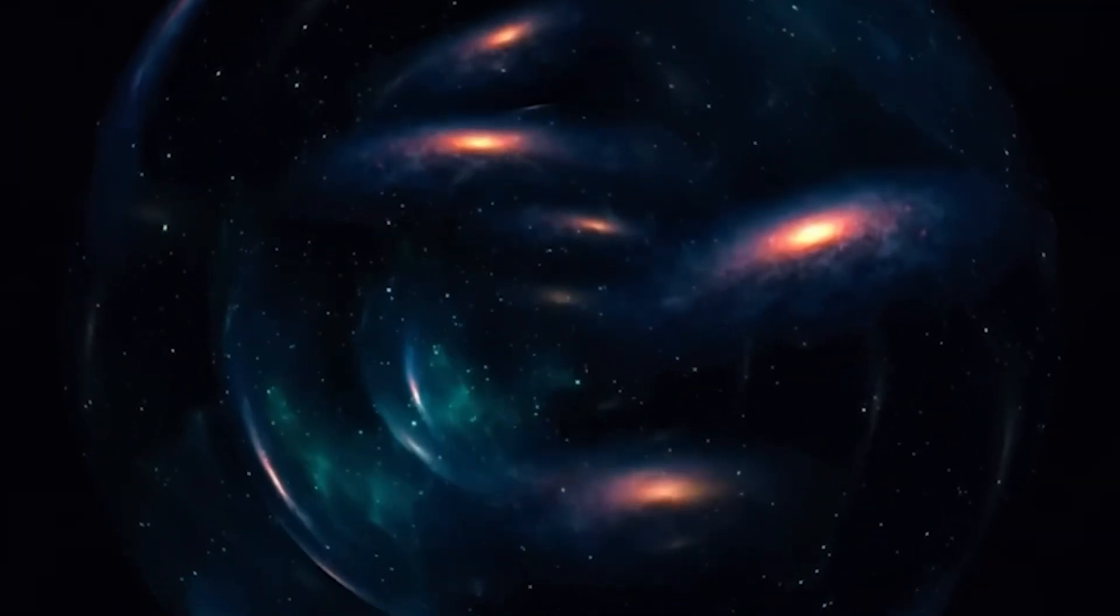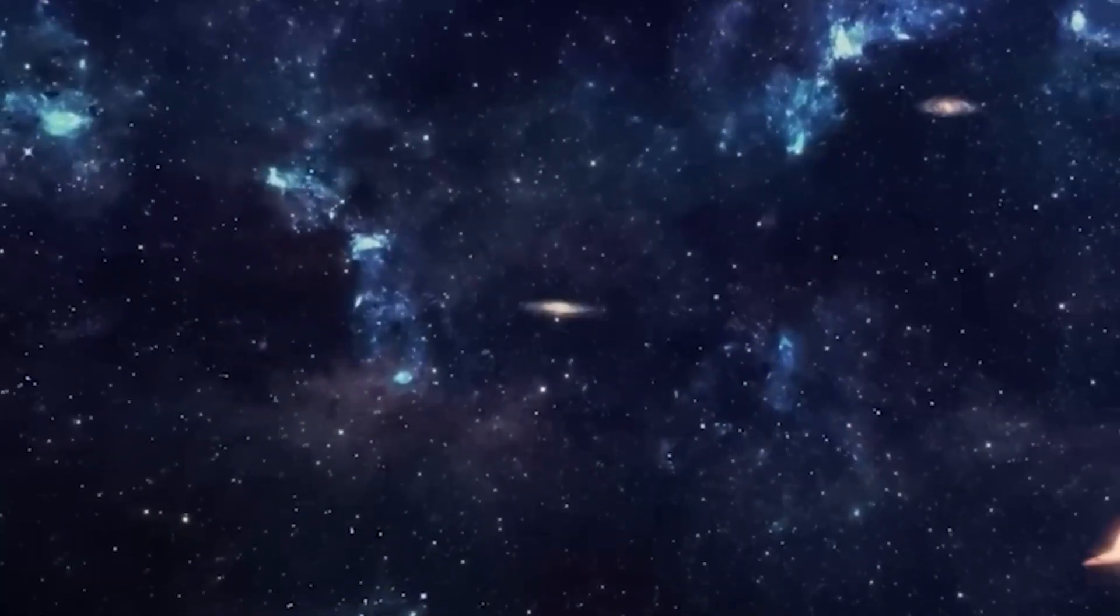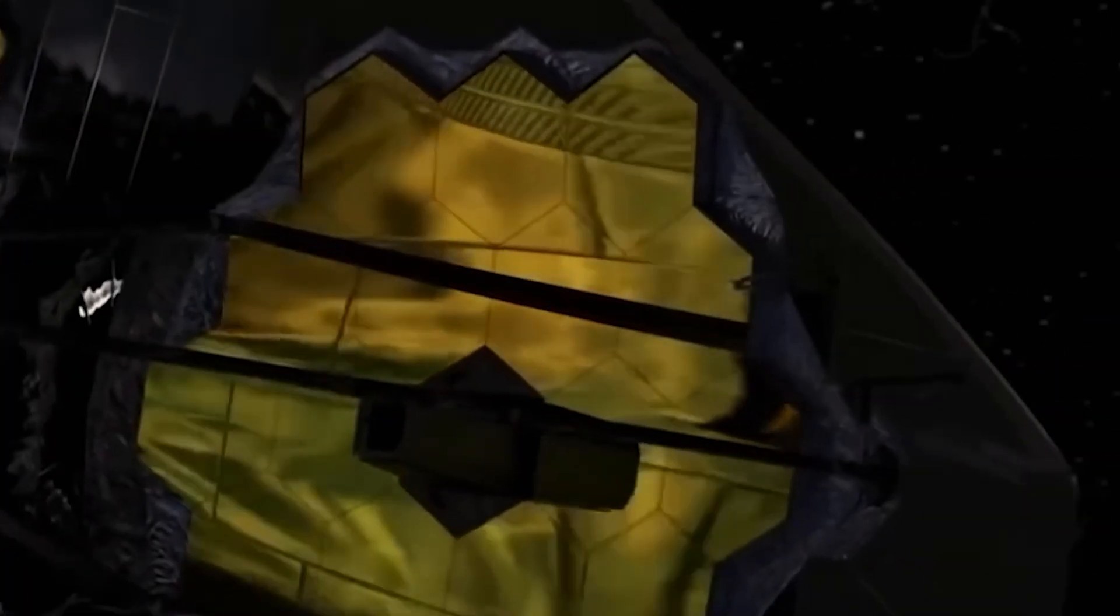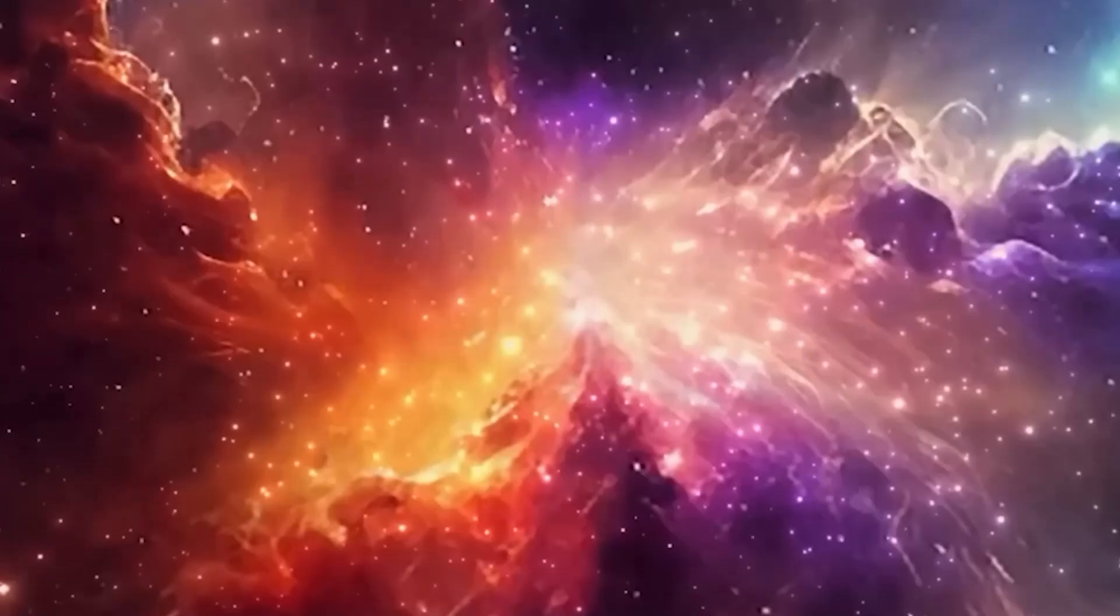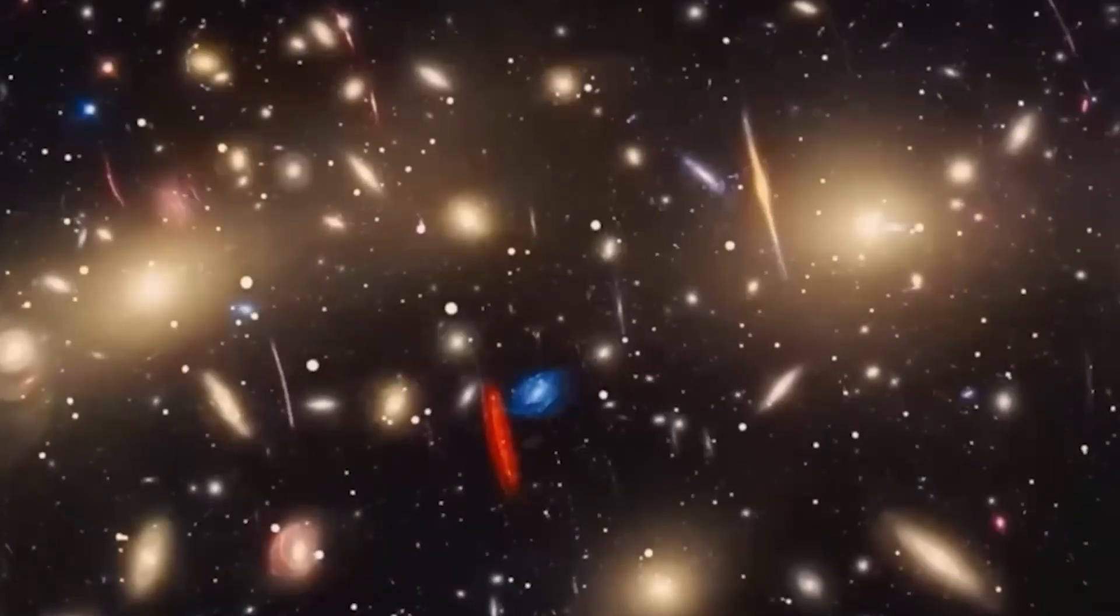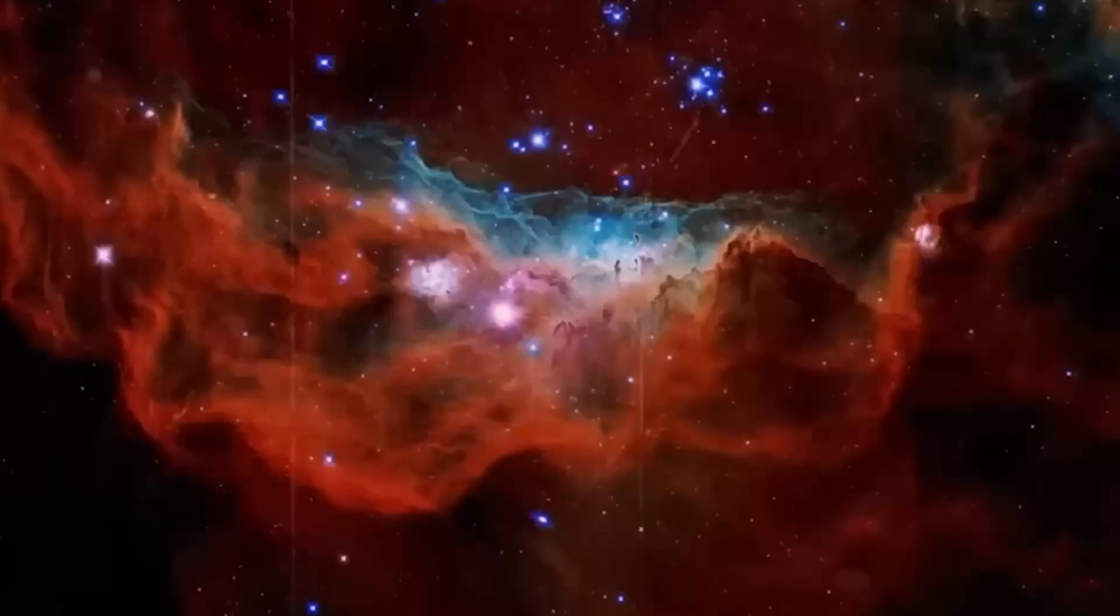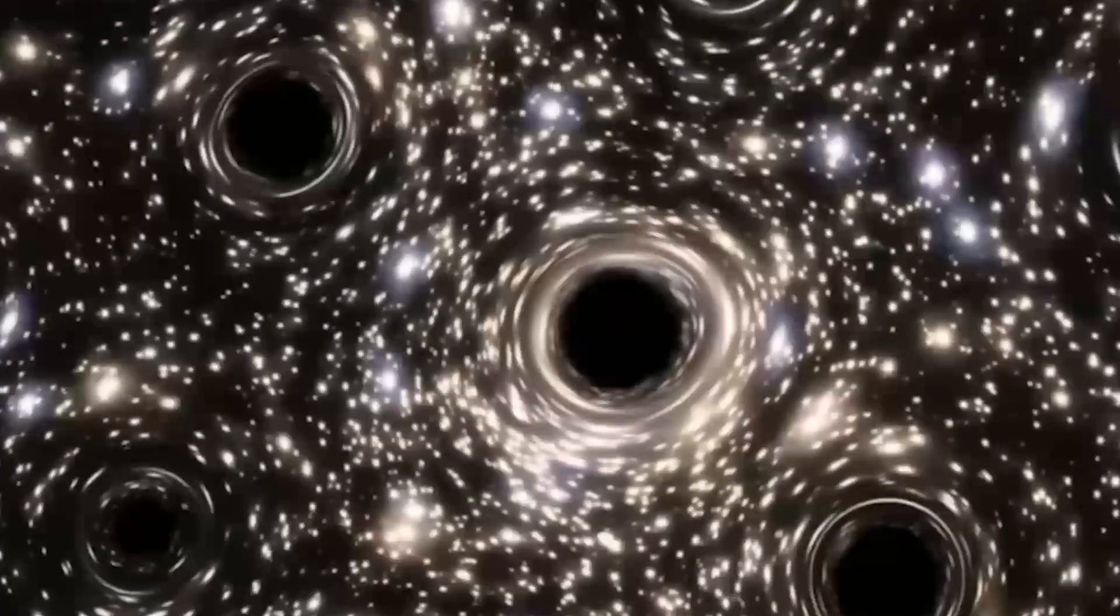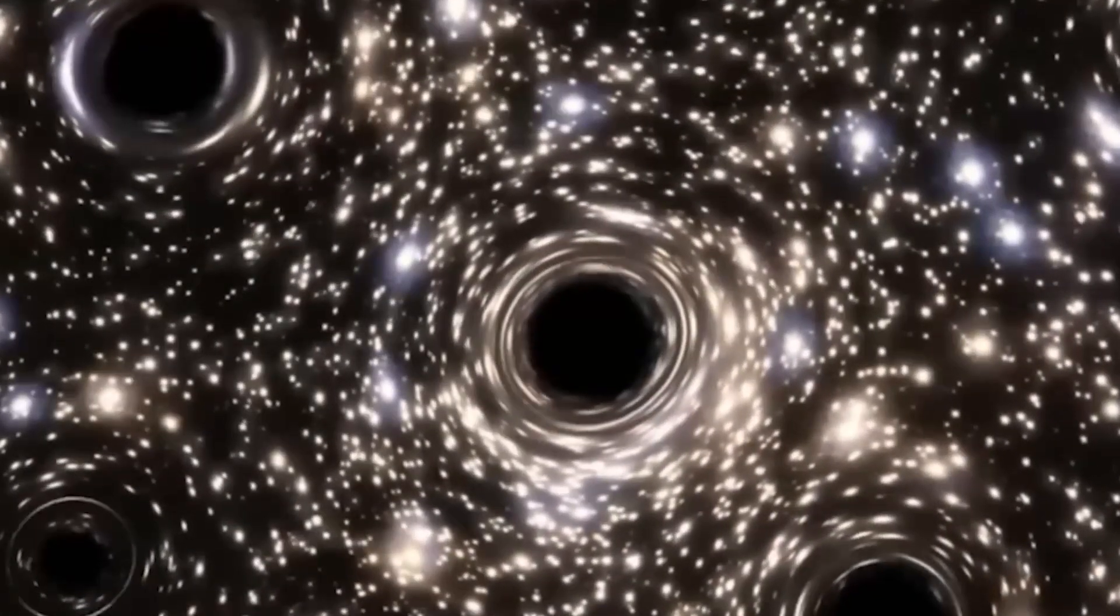Some researchers now speak openly about the possibility that the universe is eternal, cycling through infinite phases of expansion and collapse, or existing as one bubble among countless others in a vast multiverse. If so, then Webb's latest observations are not just showing us the past, they are hinting at something beyond time itself. Each red dot of light captured by Webb's mirrors could be more than a distant galaxy. It could be evidence that reality itself is layered, recursive, and endless.